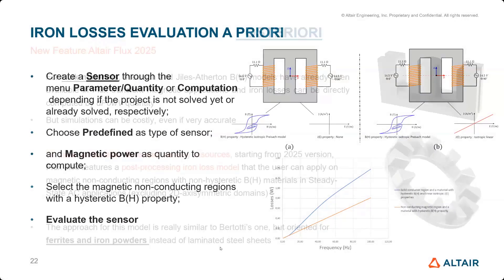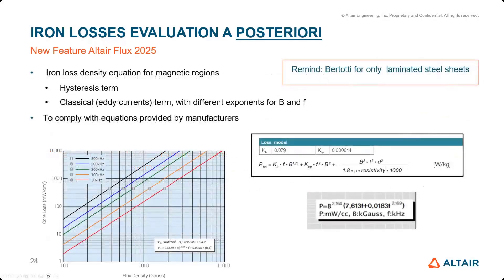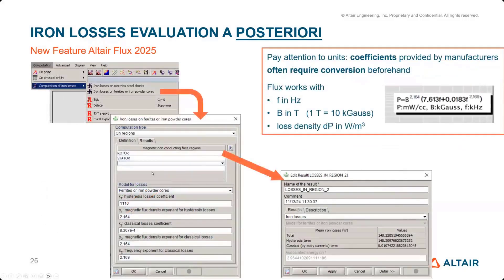Coming very soon in 2025, there's also a new method appearing for bulk materials — anything like ferrite cores or iron powder, such as SMC materials. Previously it was limited to laminated materials, but we've introduced a new method which is in a way similar to Bertotti for laminated, but slightly adapted to these types of bulk materials. You'll have a second button there — iron losses on ferrites and iron powder cores. This model has five coefficients and will be available very soon in 2025.